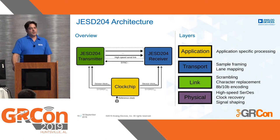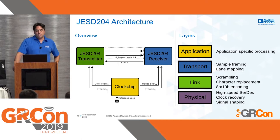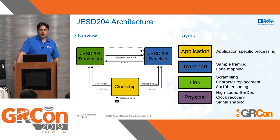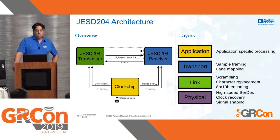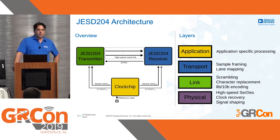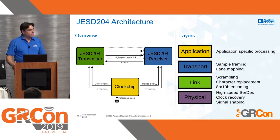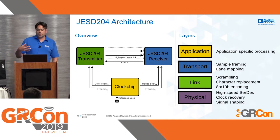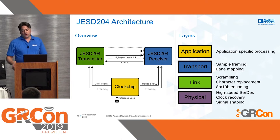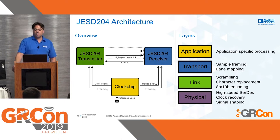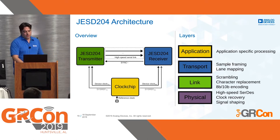The standard also describes data mapping and framing, multi-chip synchronization, and how deterministic latency can be achieved. In a typical architecture there's a transmitter, a receiver, and a clock chip. Between them are the high-speed lanes. There's also a handshaking synchronization signal from the receiver to the transmitter, and for subclass 1 deterministic latency, a SYSREF signal is required, which synchronizes both transmitter and receiver to the same instant in time. There are multiple layers: a physical layer for high-speed serial, clock recovery, and signal shaping; a link layer with character replacement and 8B/10B coding; a transport layer; and an application layer.